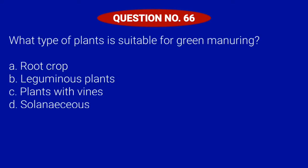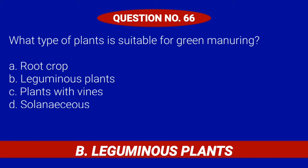Question number 66. What type of plants is suitable for green manuring? Letter A: Root crop. Letter B: Leguminous plants. Letter C: Plants with vines. Or Letter D: Solanaceous. Correct answer is Letter B: Leguminous plants.